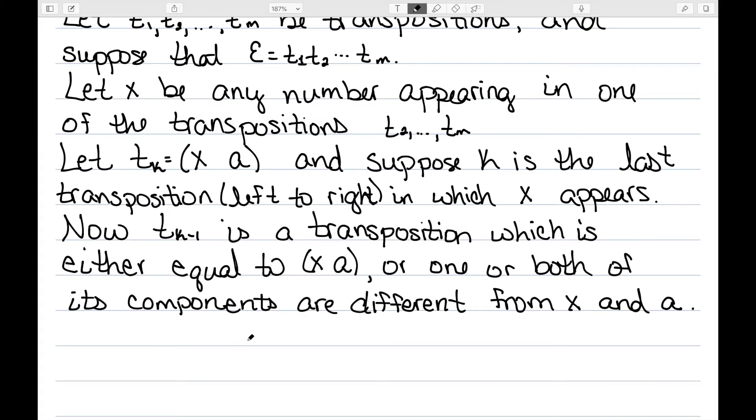We then have that the transposition tk-1, the one directly to the left, is a transposition which is either equal to xa or one or both of its components are different from xa. So either it's exactly equal to xa, it's x in another number, it's a different number a, or I have two completely unrelated numbers. So we're going to look at each one of these cases individually.